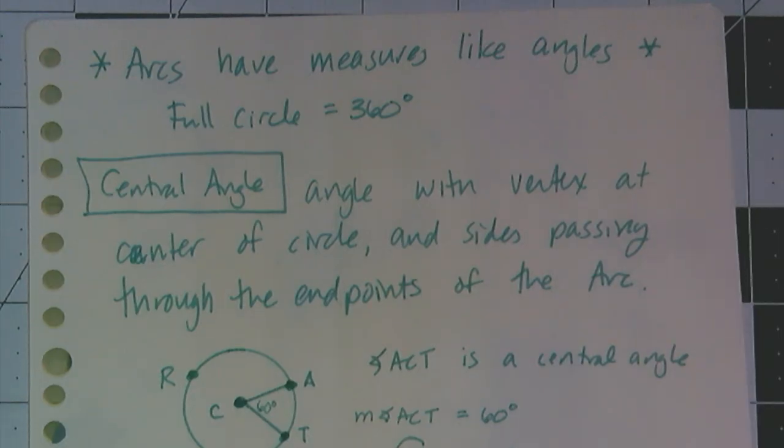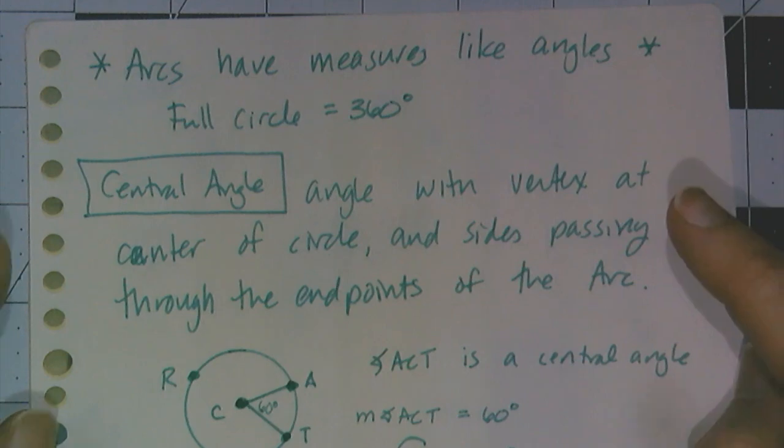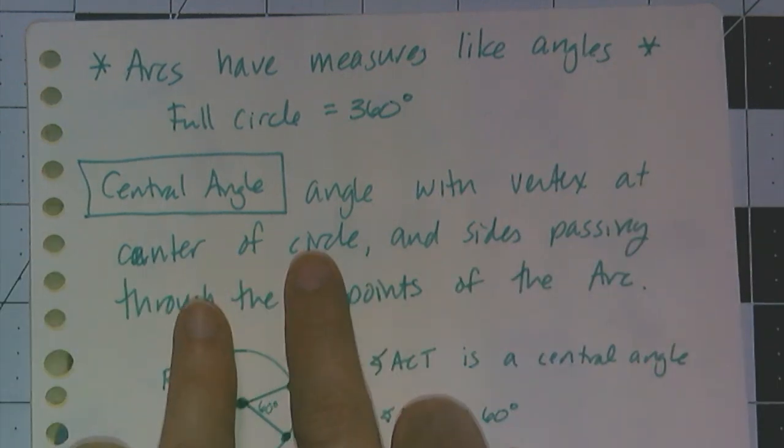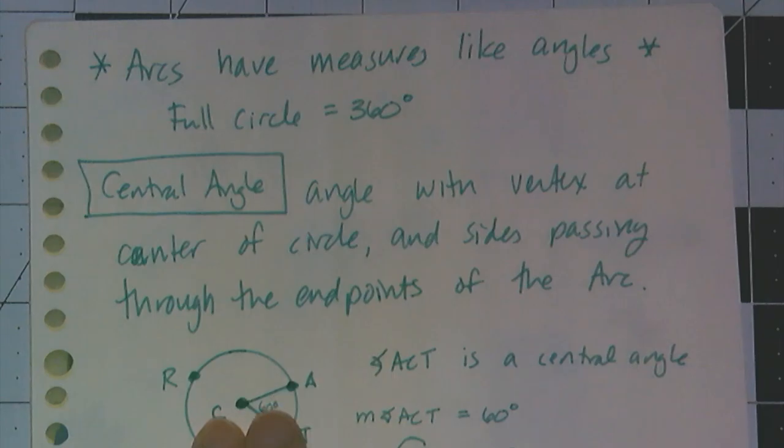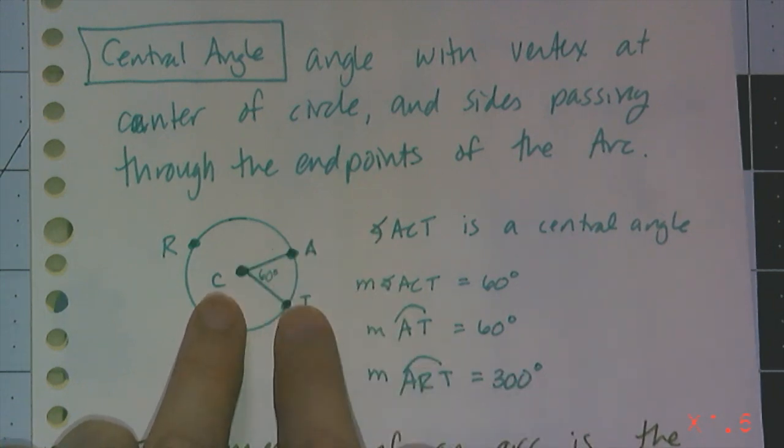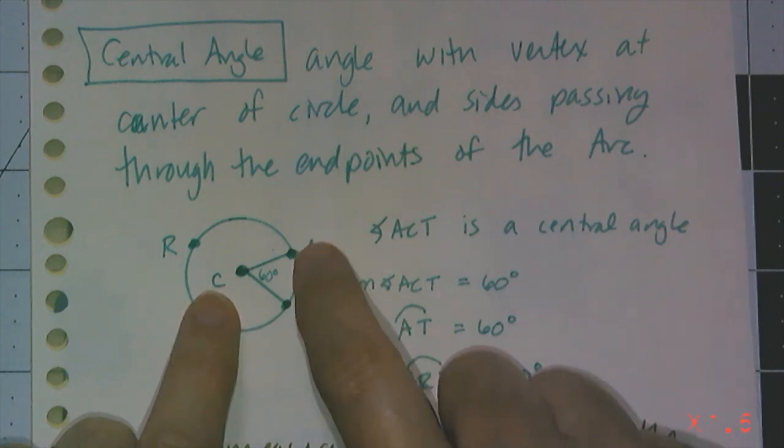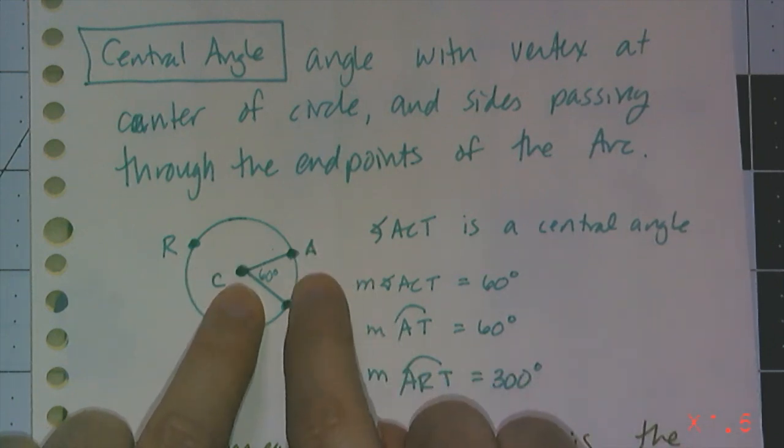Now of course an arc has a measure, it actually has several ways to measure it. We specifically designate an arc measure to be just like an angle, and a full circle, its arc measure would be 360 degrees. And so portions of arcs we measure by angles, and the specific angle we use is called a central angle. And a central angle is an angle with a vertex at the center of a circle, and sides passing through the endpoints of an arc. So this arc AT is cut by angle ACT. And so if angle ACT has a measure of 60 degrees, that means the measure of arc AT, the minor arc, is also 60 degrees. So the central angle defines the measure of the arc.